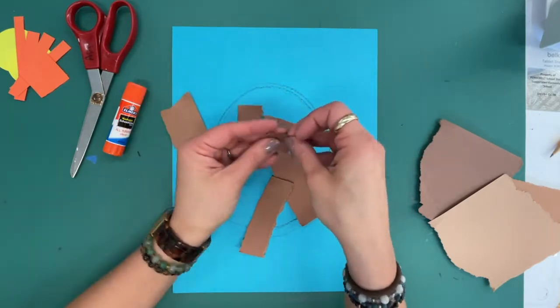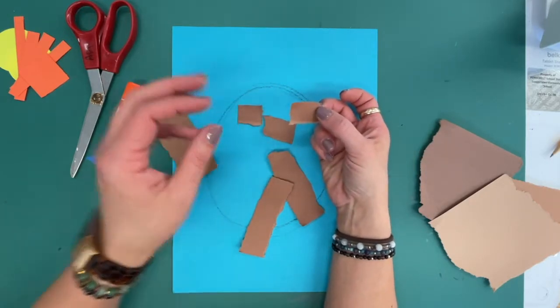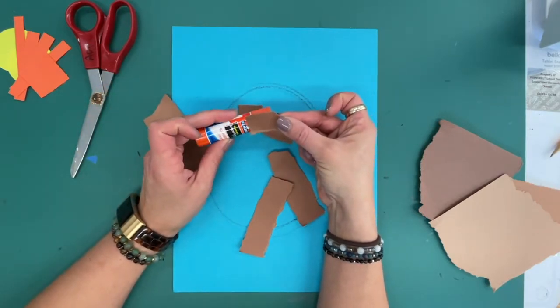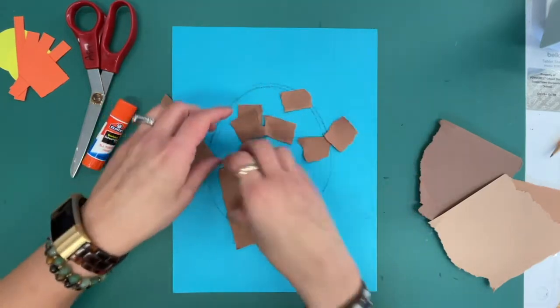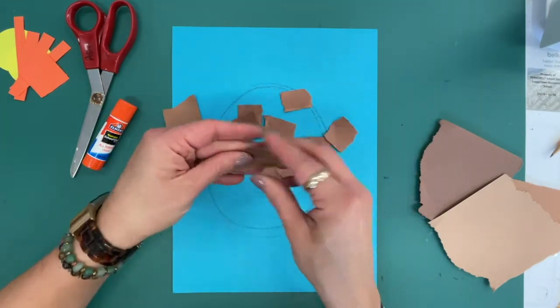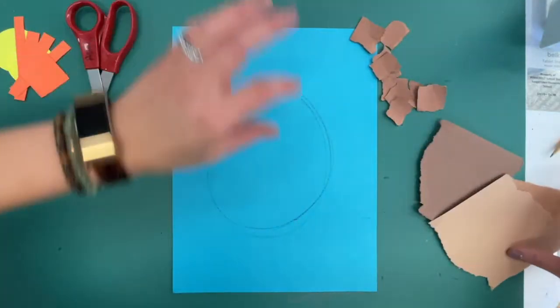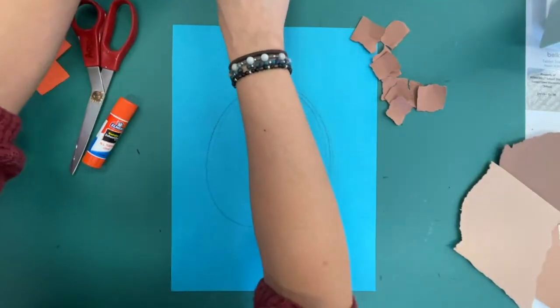Now I'm not going crazy tearing it all up. I'm just tearing it and then tearing it into pieces around the size of your glue cap, right around there. Okay, so I'm going to tear up lots of pieces. I'm going to set those aside.